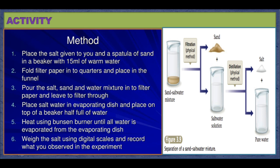For evaporation, transfer the decanted liquid into a kettle and heat it — water starts evaporating to form steam. For condensation, place some ice on a metal plate and hold it above the spout of the kettle using tongs. The steam condenses on the cold plate to form water drops. Collect these drops in a clean beaker — the water will be very clean. After all the water has evaporated, salt is left behind in the kettle.